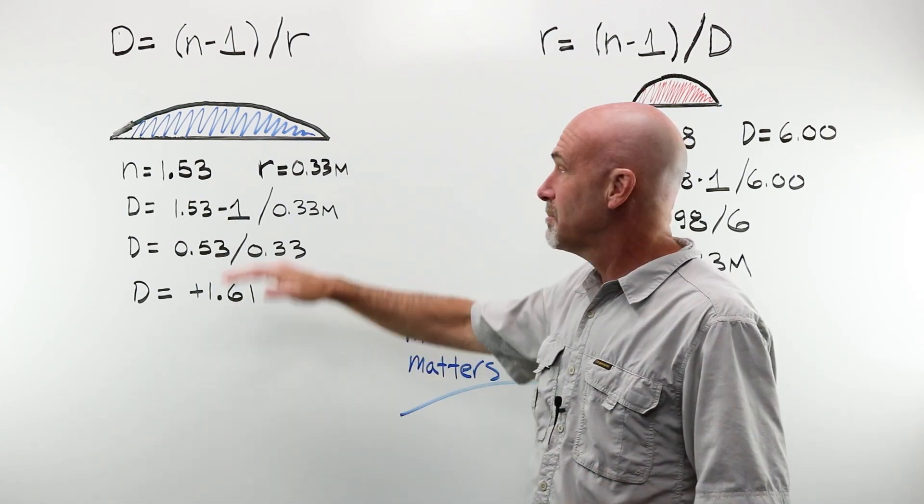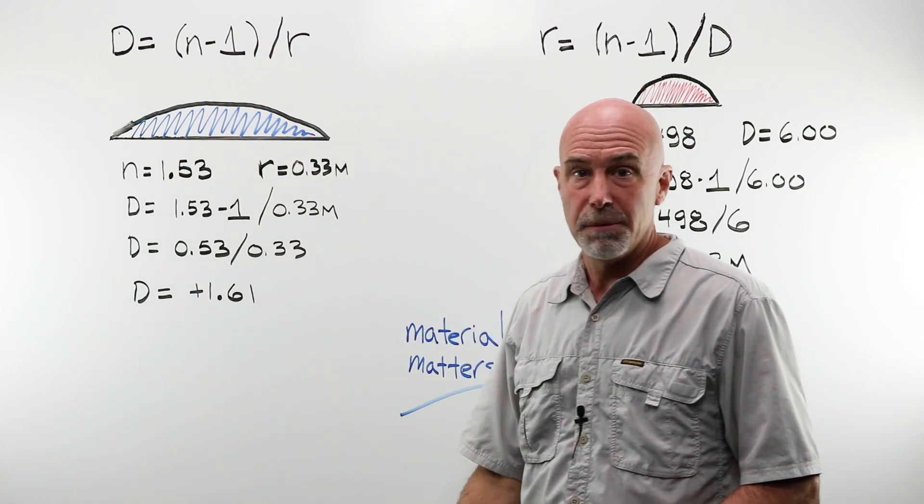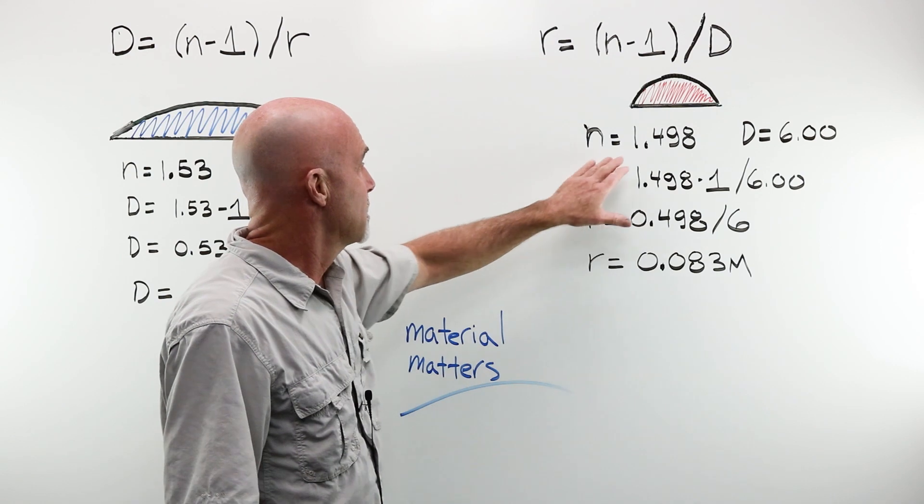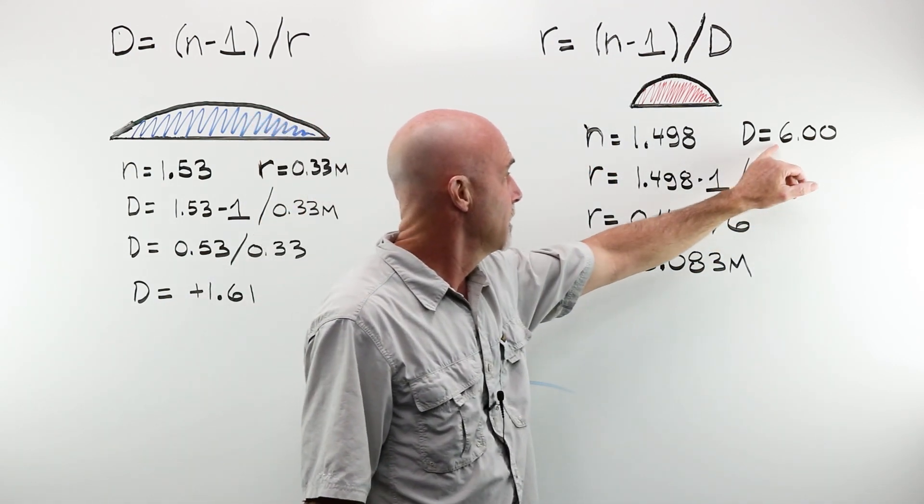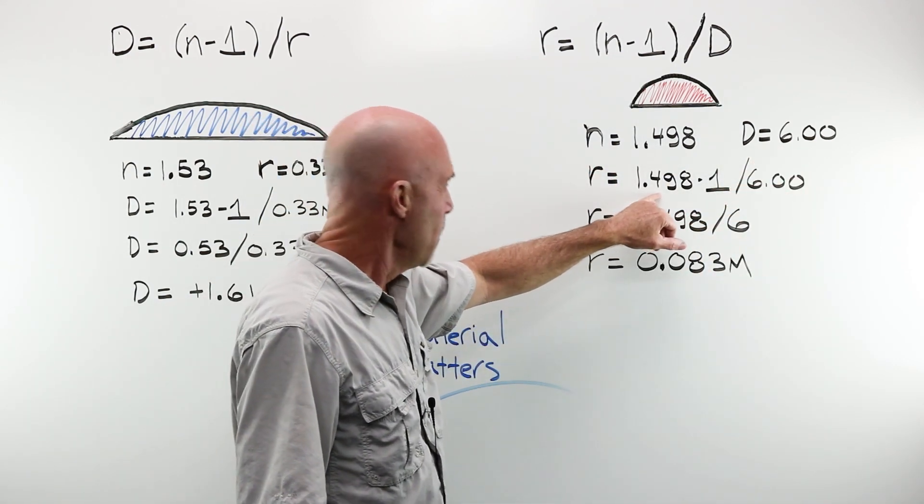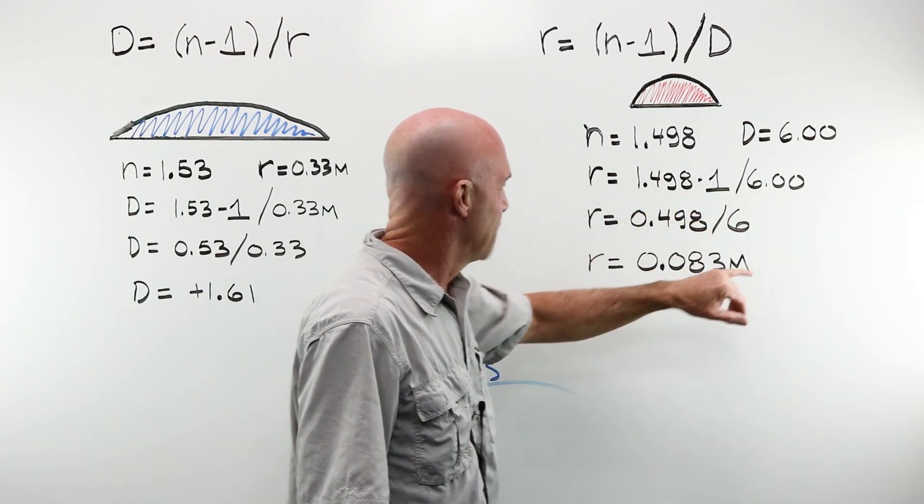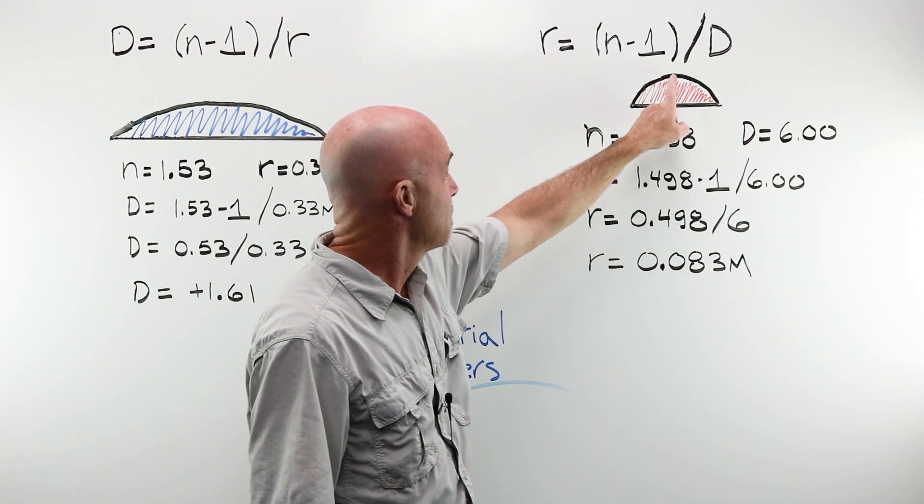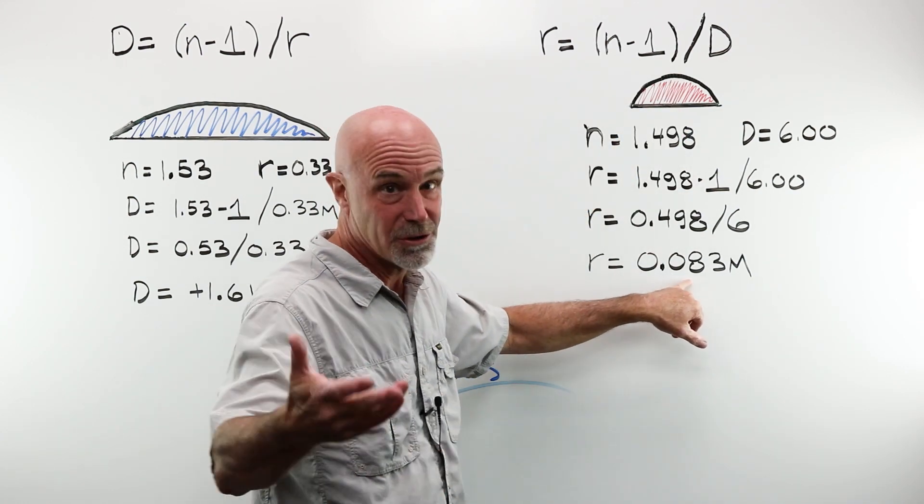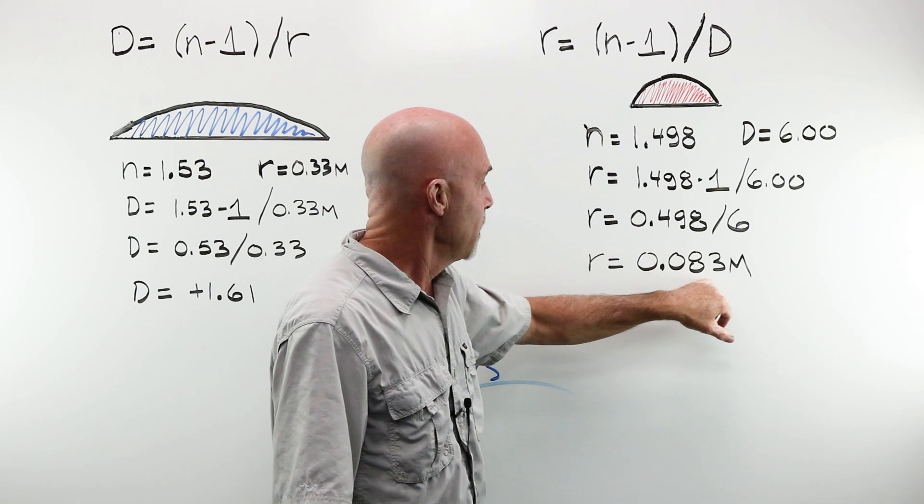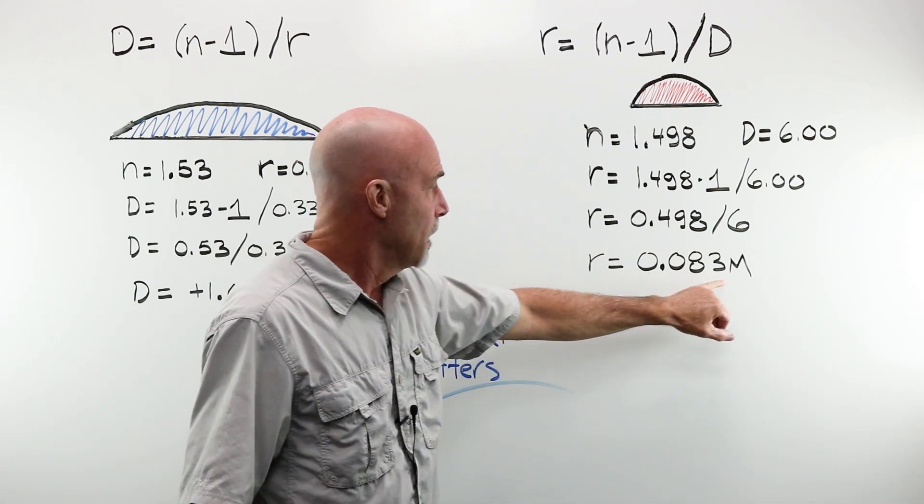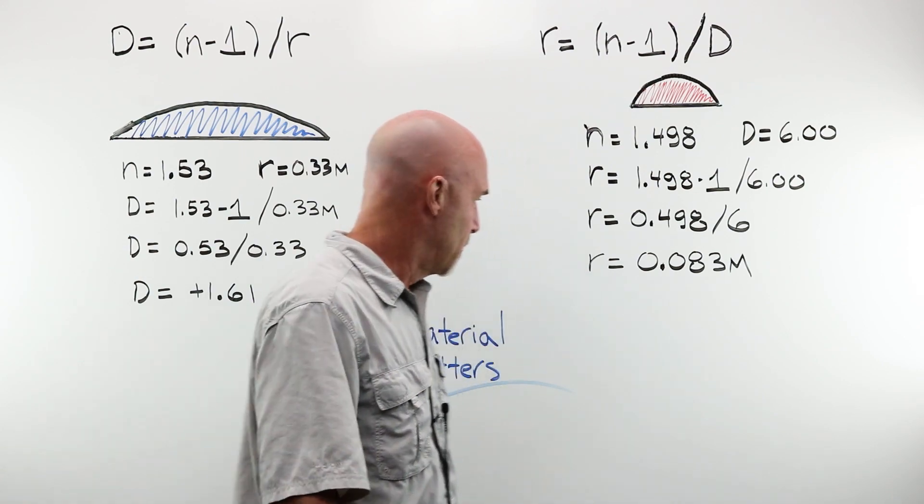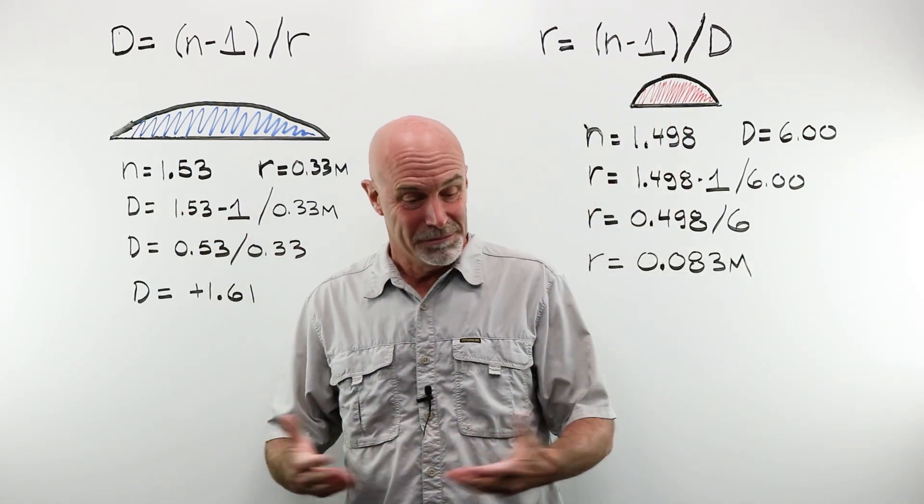Direct relationship between radius of curvature and power. If I need to work it the other way and solve for radius, N is equal to 1.498, D6. 1.498 minus 1 divided by 6, 0.498 divided by 6, tells you that the radius of curvature for this is a tiny little short. We just saw this, I just showed it to you, 0.083 meters, or in other words, 83 millimeters. And that is that.